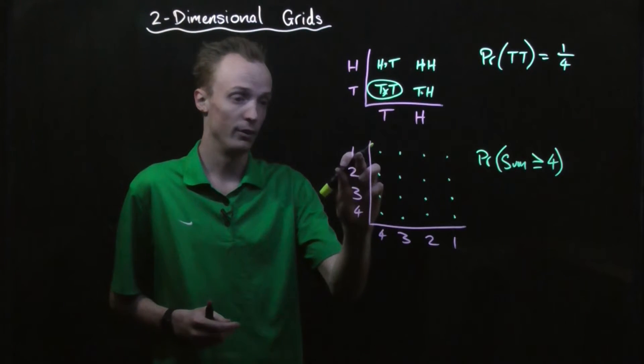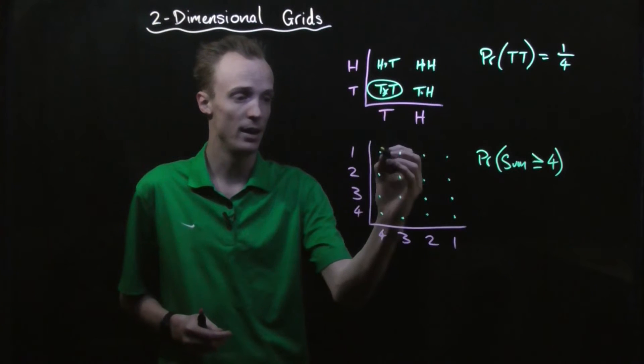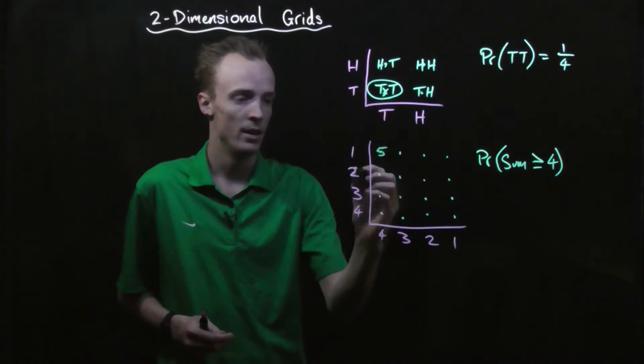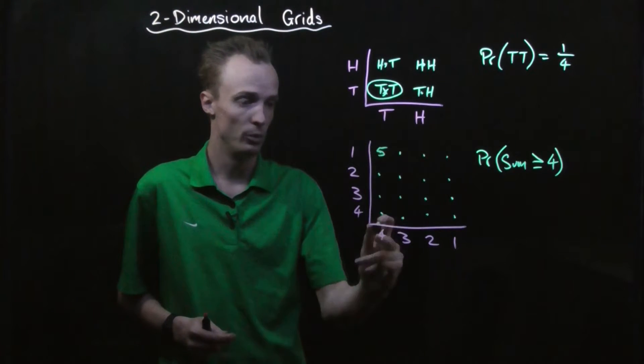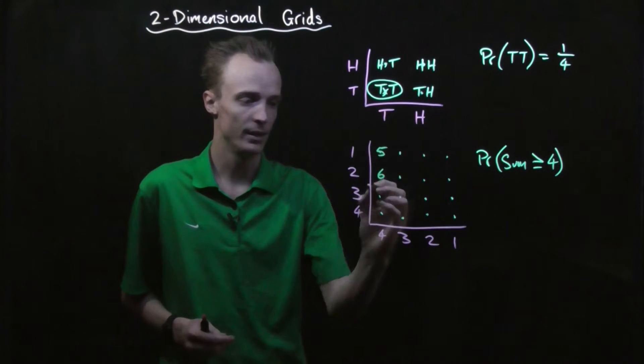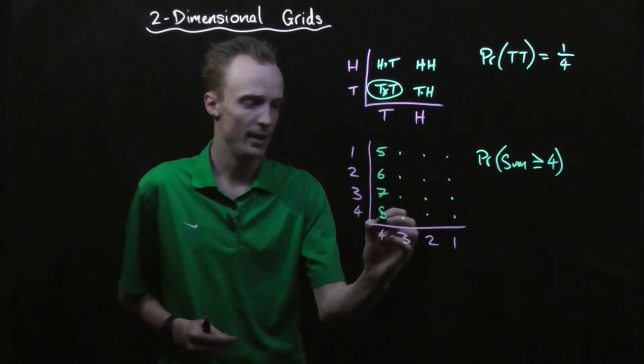So we could go on dice one, we've got a one and a four, so the sum here would be a five. On this option, we've got two and four, so the sum is a six. A three and four will mean a sum of seven. And we repeat for the remainder.